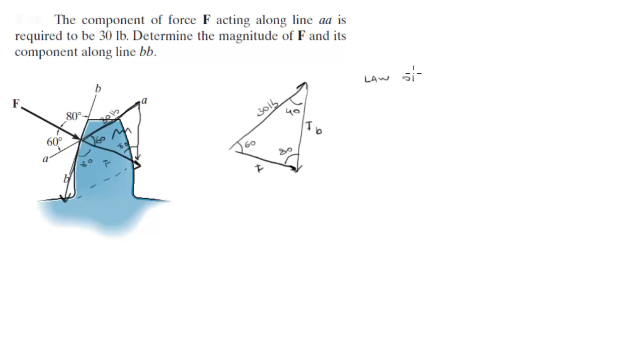Law of sines says that side A over sine of angle A is equal to side B over sine of angle B, which is equal to side C over sine of angle C. So this is side A, this is angle A. If this is side B, this is angle B. And if this is side C, this is angle C. So it's the angle that's opposite that goes with its respective side.